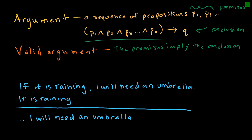Essentially, if this is a tautology — if it is always true — then it is a valid argument. Let's take a look at a statement: if it is raining, I will need an umbrella. Then we say, it is raining. Let's talk about how we might write this using propositions. Let's let 'it is raining' be represented by P.